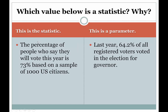Which of the values below is the statistic and why? The percentage of people who say they will vote this year is 73%, based on a sample of 1,000 U.S. citizens. Just think about where this number comes from — 73% comes from a sample of 1,000 citizens. Because it comes from a sample, it is a sample statistic. If it came from all U.S. citizens — if we surveyed all of them and asked whether they plan to vote — then we'd have a population parameter.